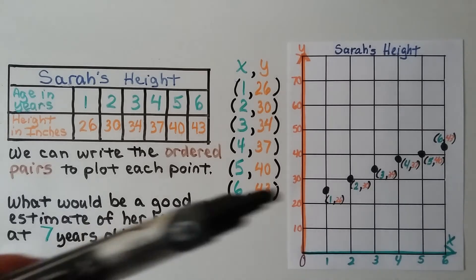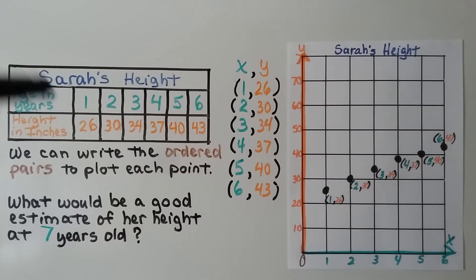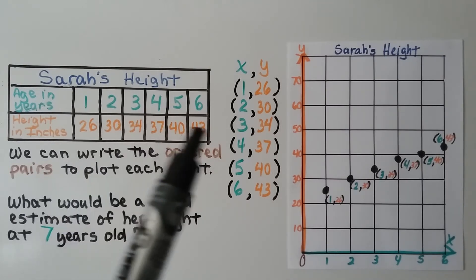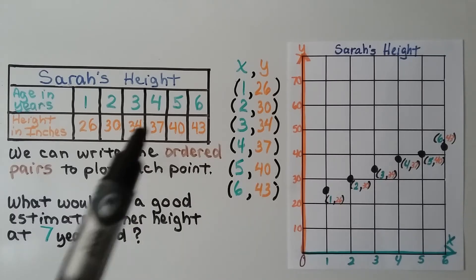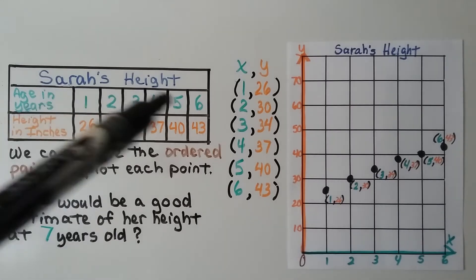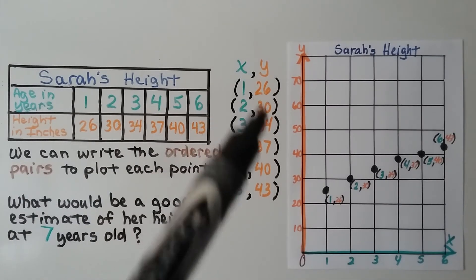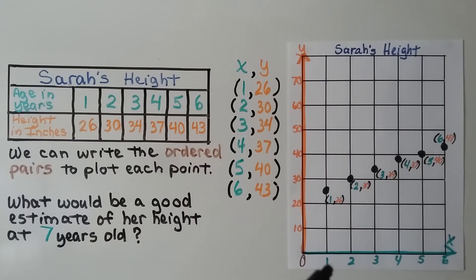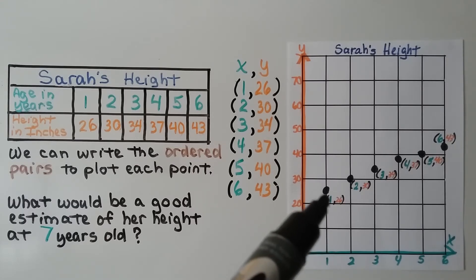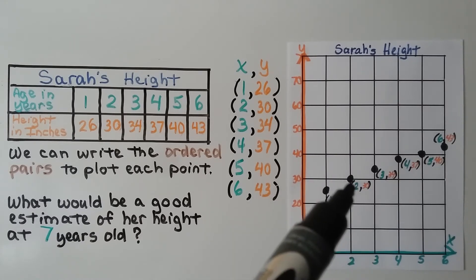Here we have a graph and a table showing Sarah's height by her age in years and her height in inches. When she was one, she was 26 inches tall. When she was two, she was 30 inches tall, and so on. We can plot these points as ordered pairs — the x values are years and the y values are inches. At one year old she was 26 inches, so on the graph at one year we mark 26 inches, which is between 20 and 30. When she was two, she was 30 inches, so two and 30 meet at that point.